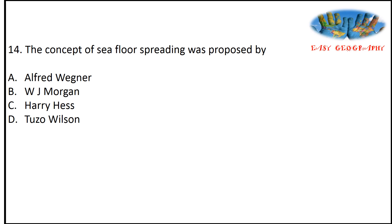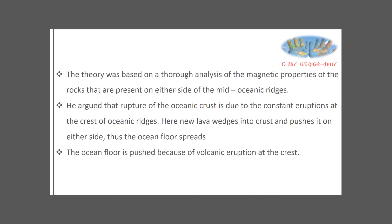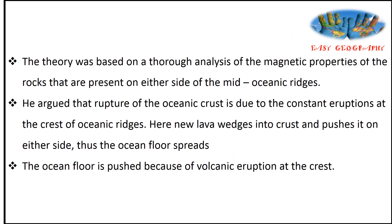The concept of seafloor spreading was proposed by — options: Alfred Wegener, W.J. Morgan, Harry Hess, Tuzo Wilson. Answer is Harry Hess. The theory was based on analysis of magnetic properties of rocks on either side of mid-oceanic ridges. He argued that rupture of oceanic crust is due to constant eruptions at the crest of oceanic ridges, where new lava wedges into the crust and pushes it on either side.